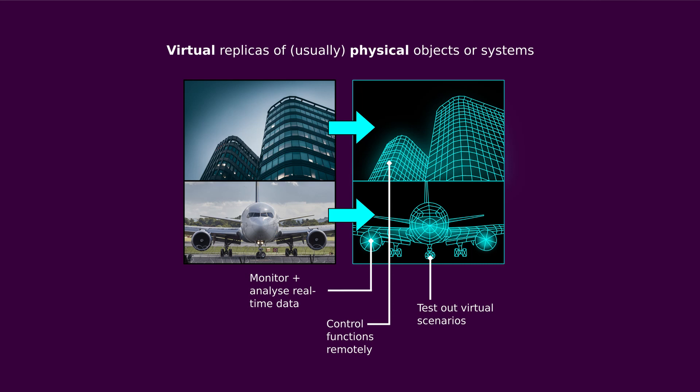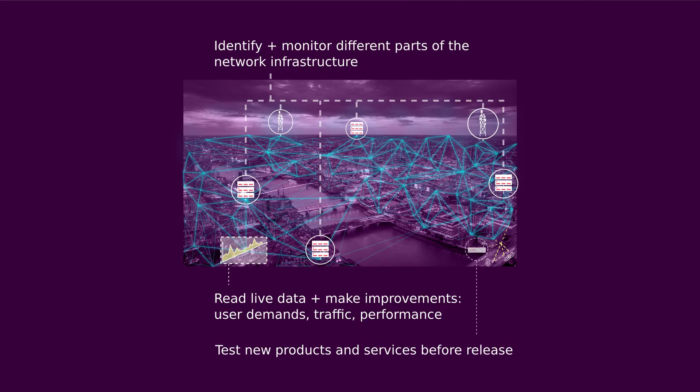So what is a digital twin? It's usually a virtual replica of a physical object or system such as an aeroplane or a building — like a really complex computer model which uses live data from the actual system. This would be really useful for 5G networks. A digital twin could help network operators test out new products and services before releasing them onto the real network, or they could use it to monitor different parts of the network using live data.